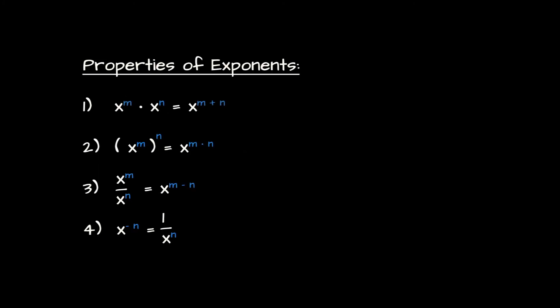This leads us to our next properties of exponents: x to the m divided by x to the n equals x to the m minus n — we simply subtract the exponent in the denominator from the exponent in the numerator. Relatedly, and as a consequence of this property, a negative exponent — x raised to the power minus n — can be rewritten as 1 over x to the n.